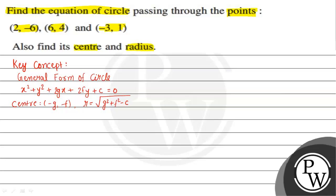The given points through which the circle passes are (2, -6), (6, 4), and (-3, 1). Let us consider the general circle equation as equation 1.